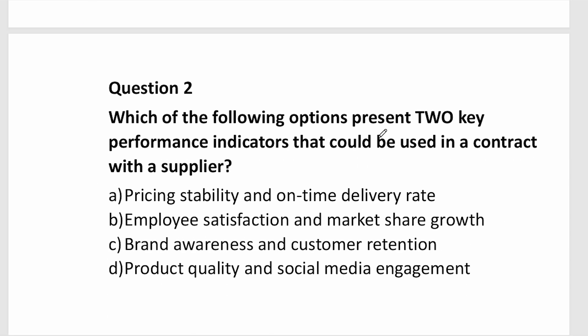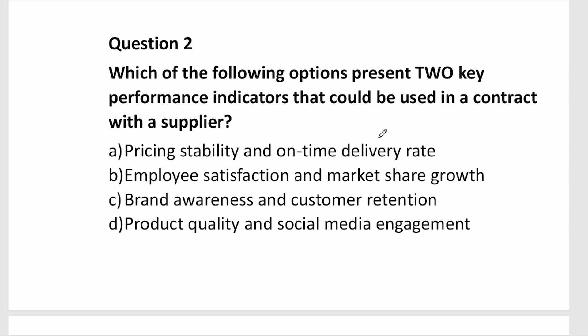Another question: 'Which of the following presents two KPIs that could be used in a contract with a supplier?' Options might include: pricing stability and on-time delivery rate; employee satisfaction and market share growth; brand awareness and customer retention; or product quality and social metrics. Pricing stability and on-time delivery rate makes more sense. The question tests whether you know what a KPI is and can point out examples used in procurement.